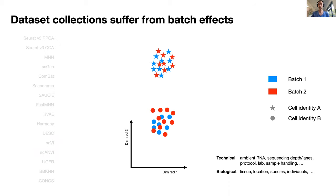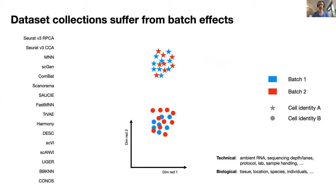Now, there are methods to solve this called data integration methods, and here is just a list of 16 that are popular and have been used rather frequently. Typically, when you use these methods, you get different results no matter what the output is, and so it's important to guide method choice to be able to evaluate whether the output is something that is true to the task that you're setting it.